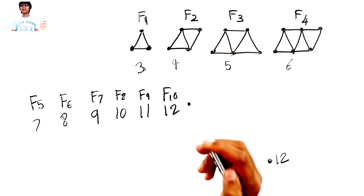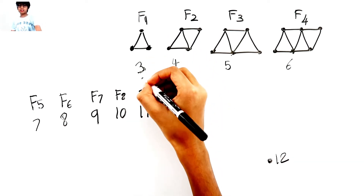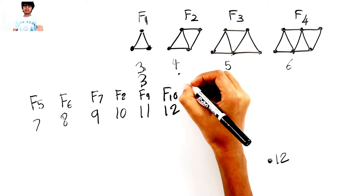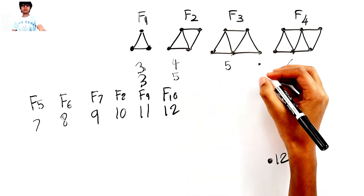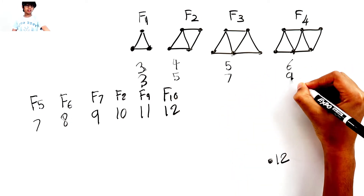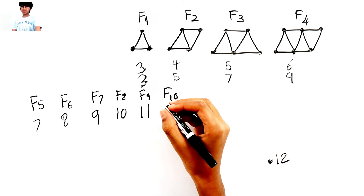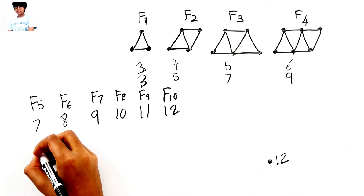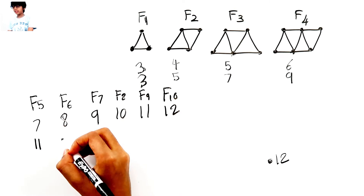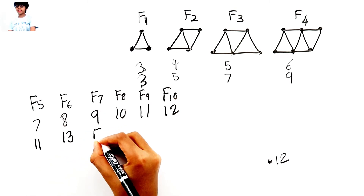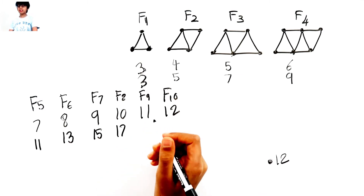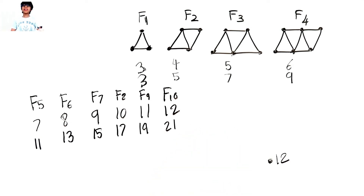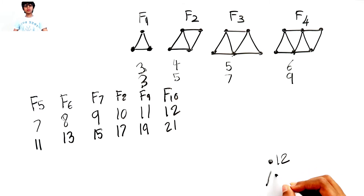Now let's find it for the lines. Three lines for figure one, five lines for figure two, seven lines for figure three, nine lines for figure four. It's increasing by two: three plus two is five, five plus two is seven, seven plus two is nine. That means for figure five it's eleven, figure six it's thirteen, figure seven it's fifteen, figure eight it's seventeen, figure nine it's nineteen, and figure ten it's twenty-one lines.